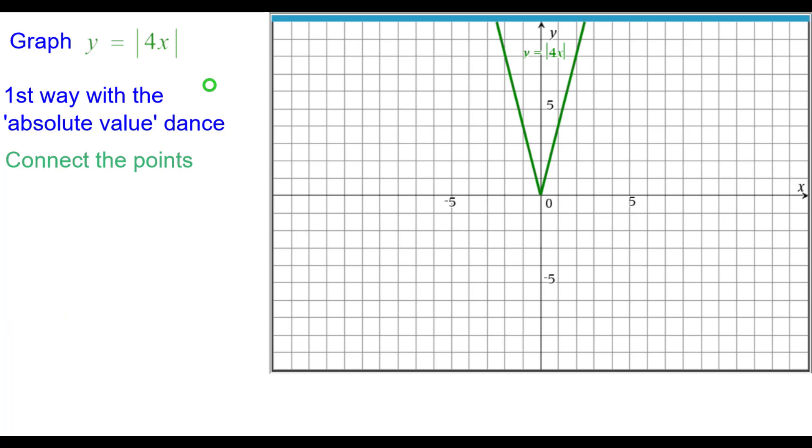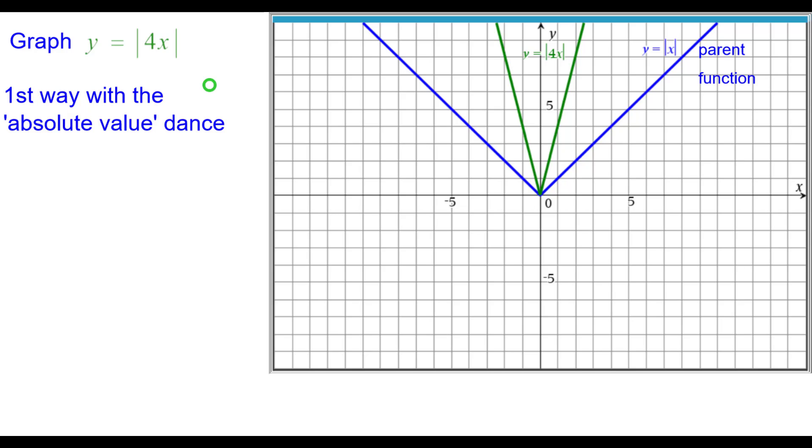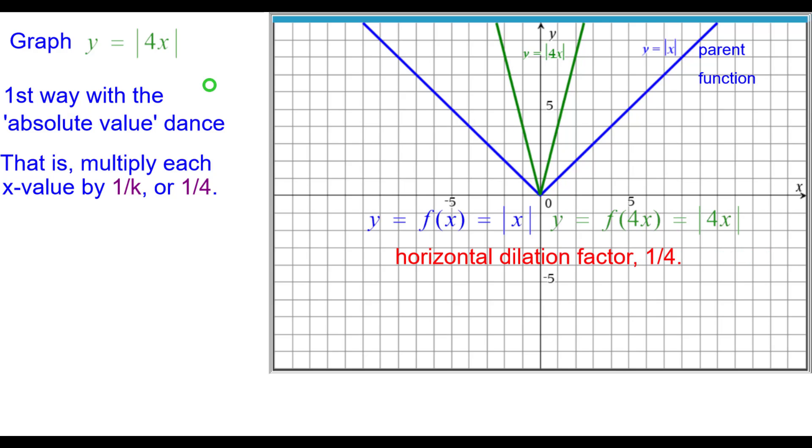Connecting the points we get a very narrow V especially when compared to the absolute value parent function. And you will notice that the same y coordinate on the green and blue but the blue x coordinate times 1 fourth is the green x coordinate on all points. This has a horizontal dilation factor of 1 fourth and this is an example of the green function of a horizontal shrink.